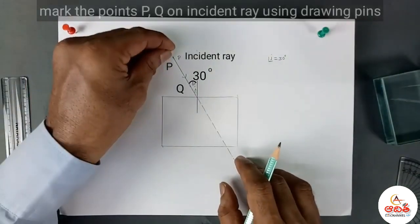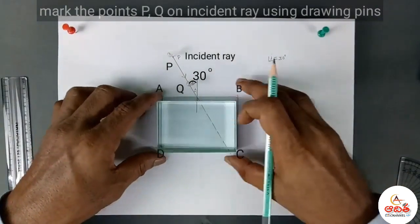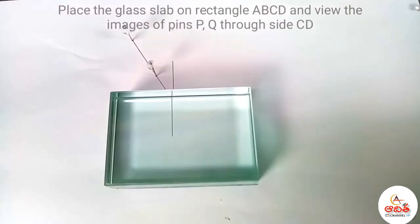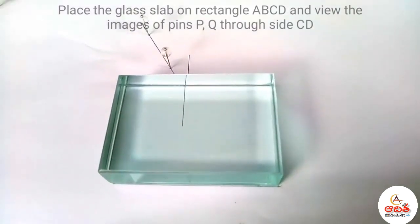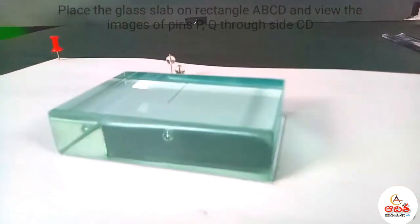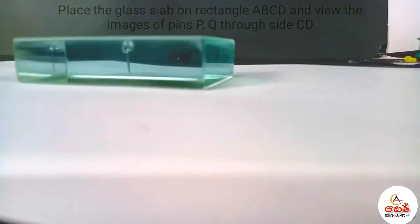Mark the points P and Q on the incident ray using drawing pins. Place the glass slab on rectangle ABCD and view the images of pins P and Q through side CD. Now you can see clearly that the two pins are in the same line.